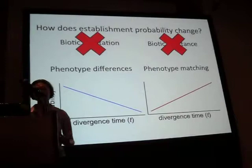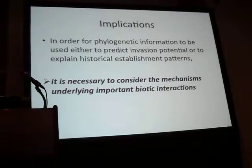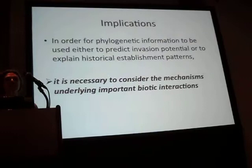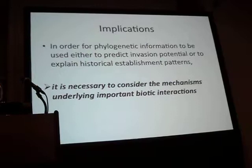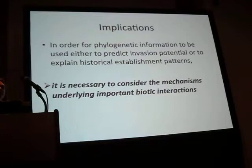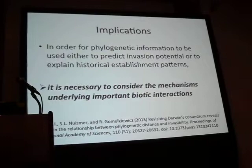The implications of this are that we can still use phylogenetic information to predict and explain patterns of invasion, but we need to pay much more attention to the mechanisms underlying interactions, and we probably need to gather much more information about how common these two different mechanisms are. More details can be found in the published paper.